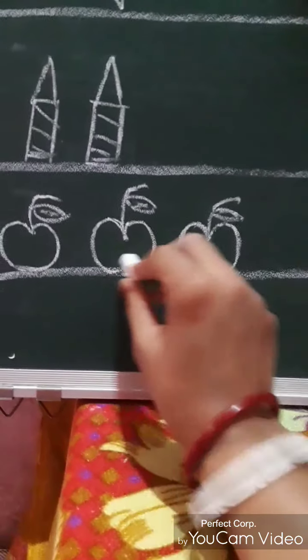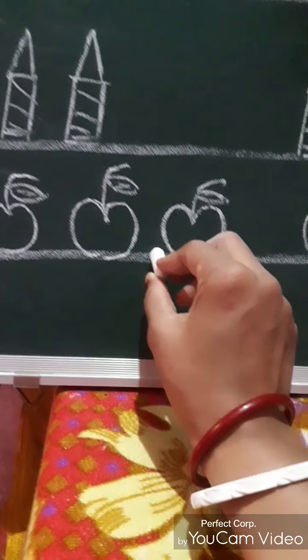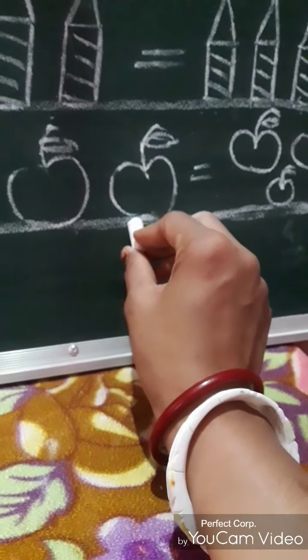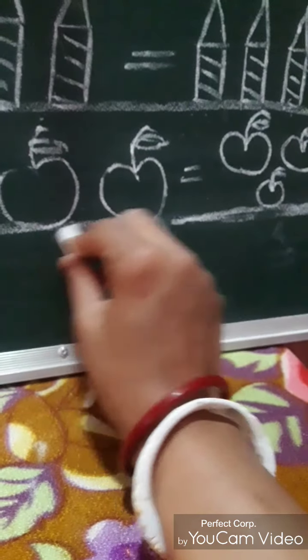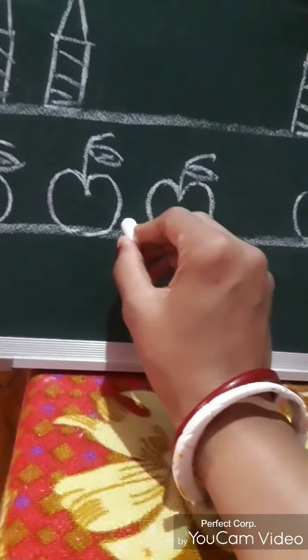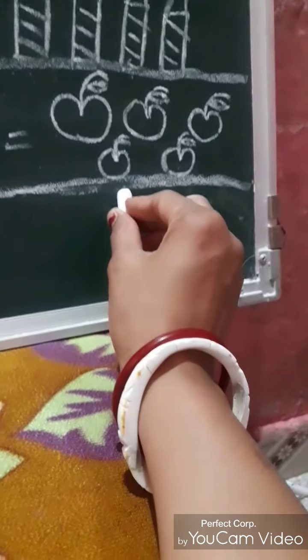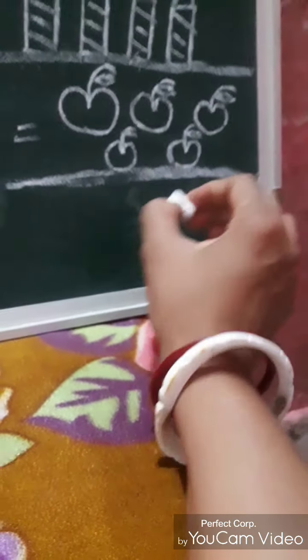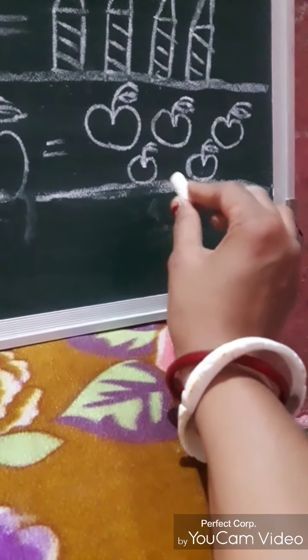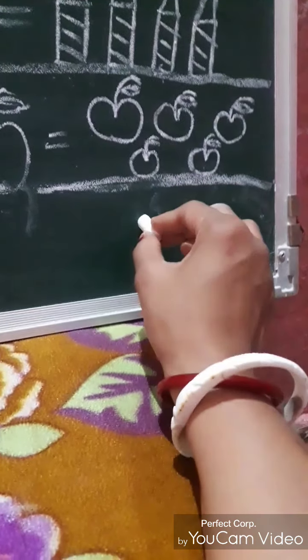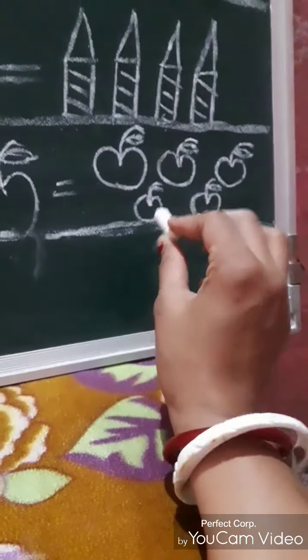Now come, we will move to our next line. Here I drew three apples, and there I drew two apples. When we keep these apples and those apples at one place, all together we will get five. That clears our concept of addition.